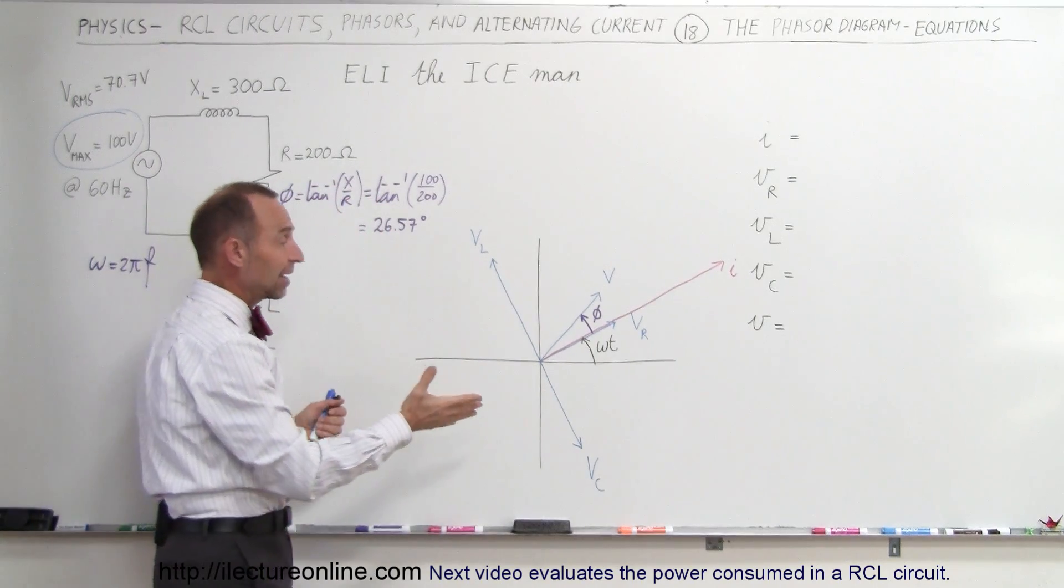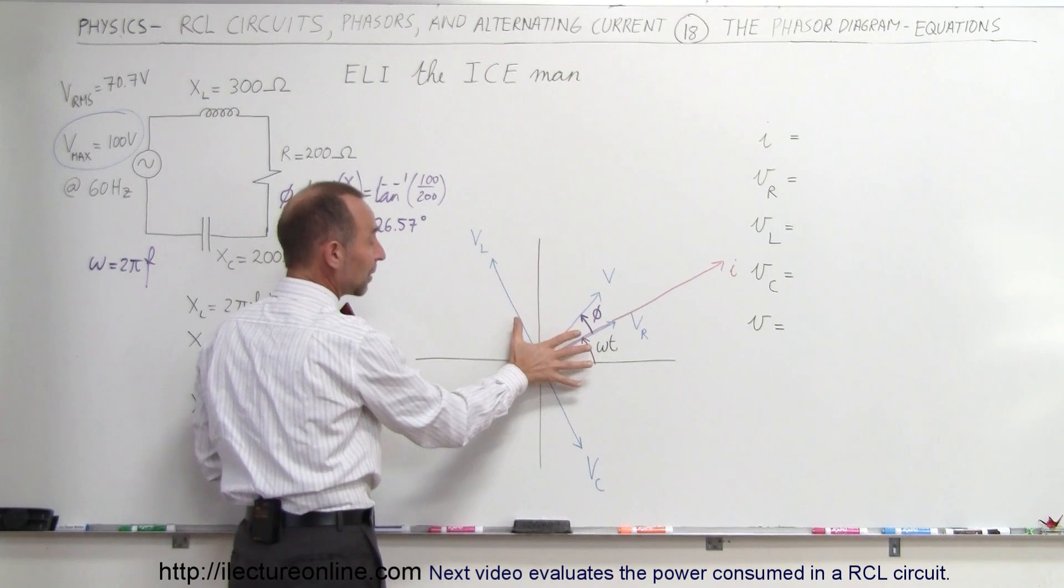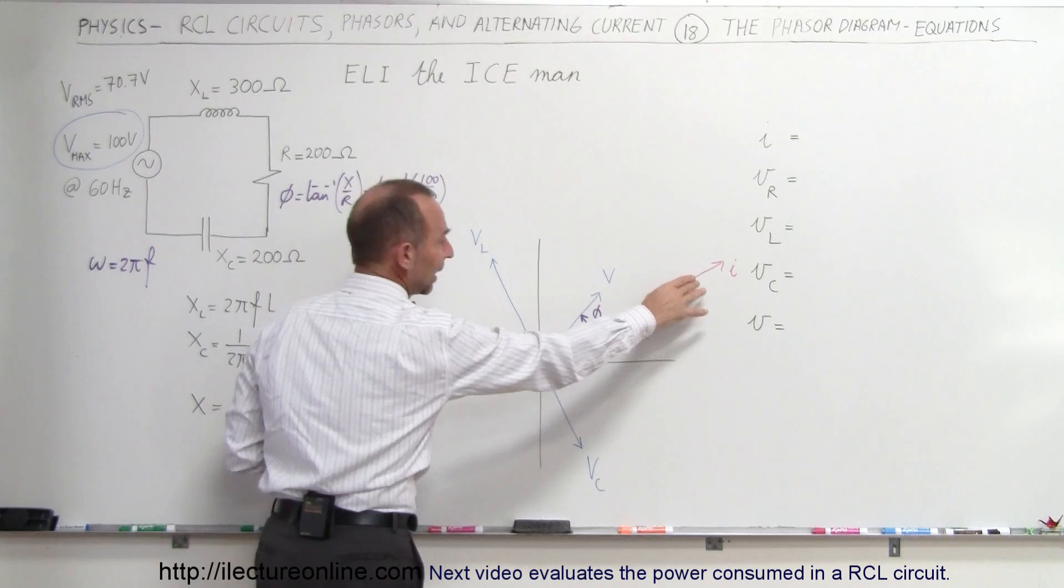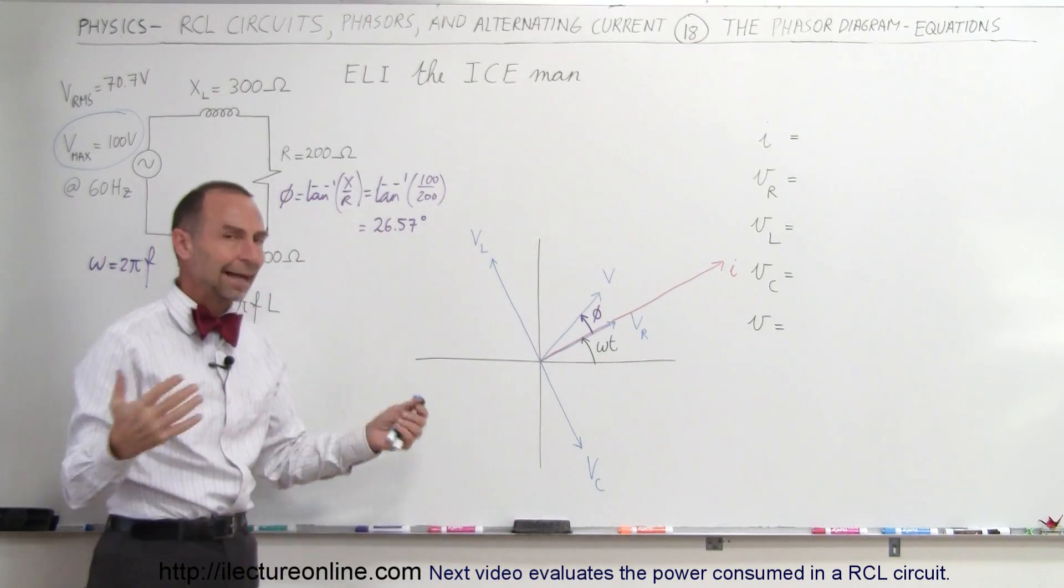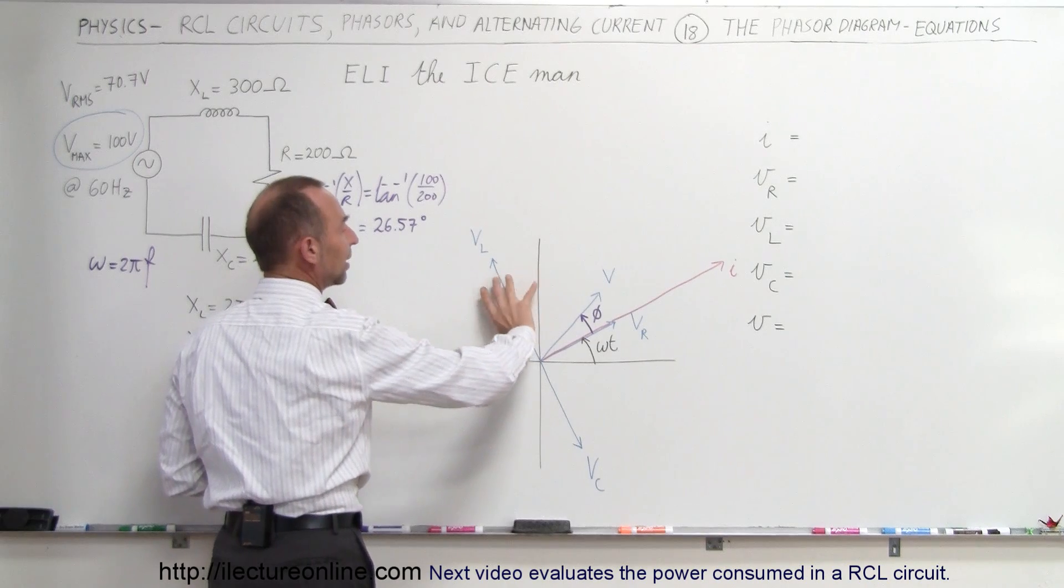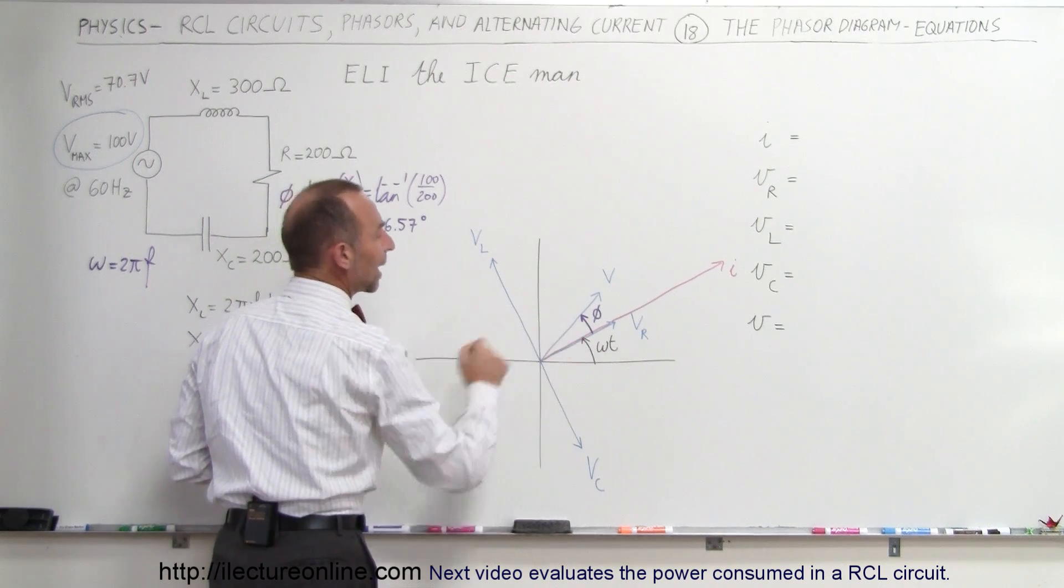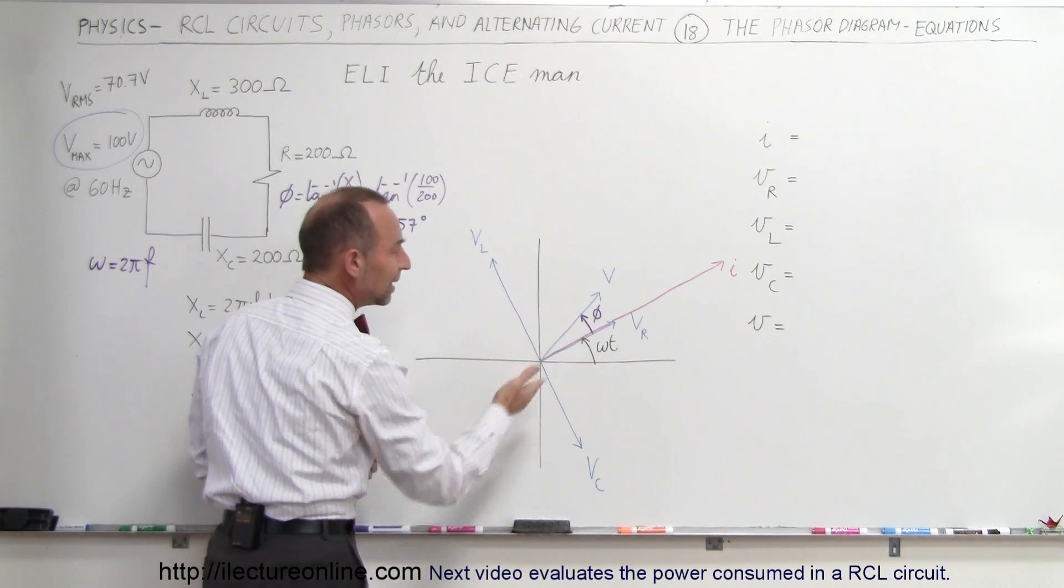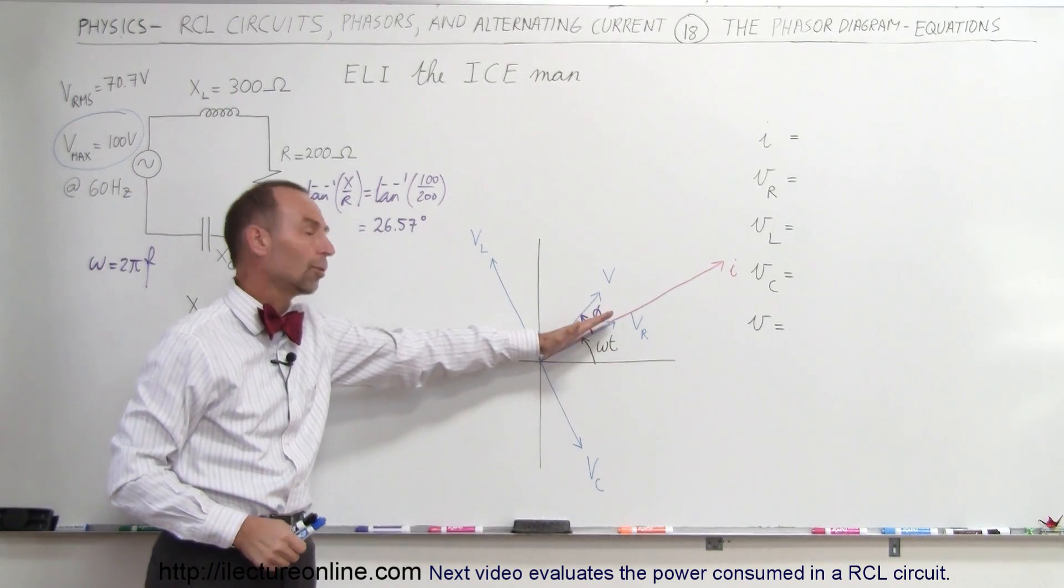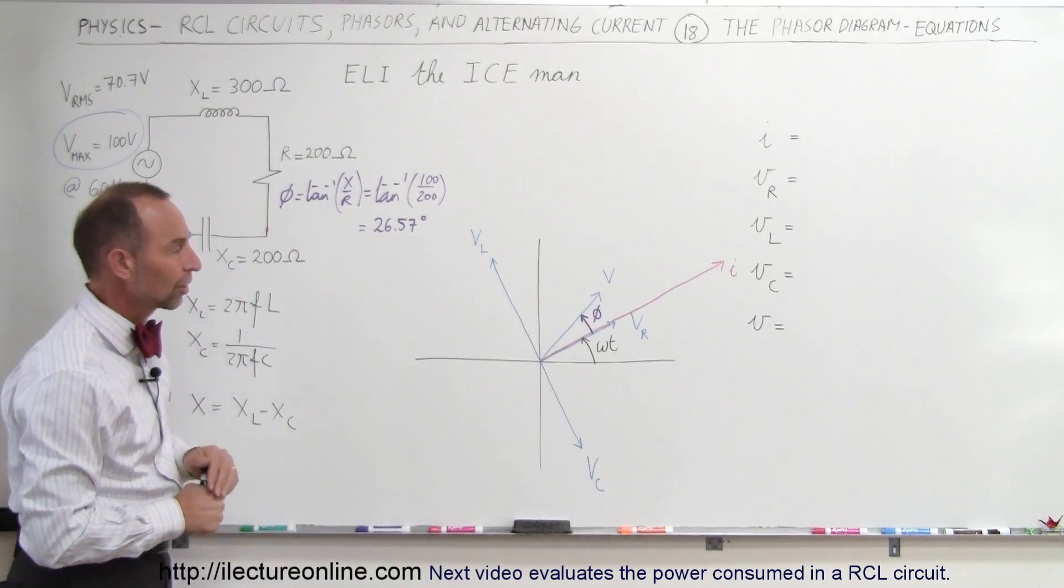Notice that a phasor diagram like this simply represents the voltages of all the components, the voltage across the circuit, and the current in the circuit. At any moment in time, this phasor diagram simply will rotate around like this at the frequency omega times the time that gives us, of course, the phase difference between when it started at time equals zero to some later time on the circuit.